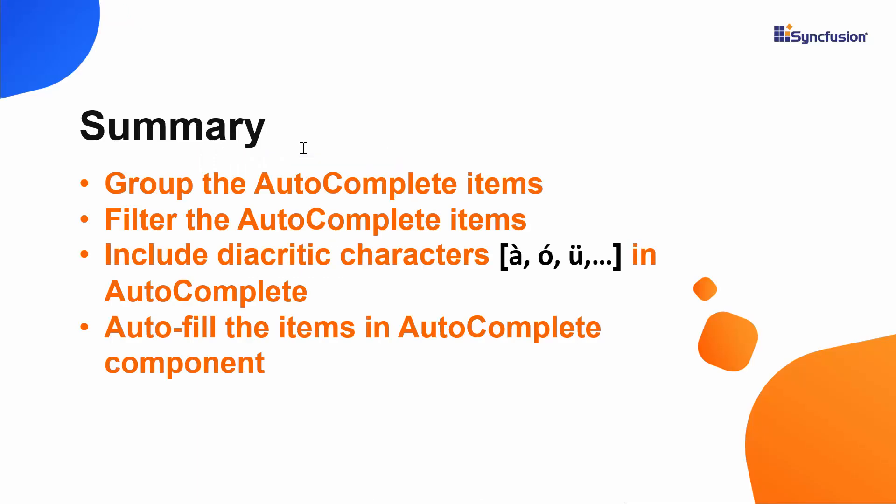Let me summarize some of the important points. We have seen how to group the Vue autocomplete items as well as how to filter those items. We have also seen the supported filter types in autocomplete and how to apply those filters, as well as how to include diacritic characters while filtering. Finally, we have also seen how to autofill typed-in characters in the autocomplete component. You can download the example from the GitHub link shared in the description below.